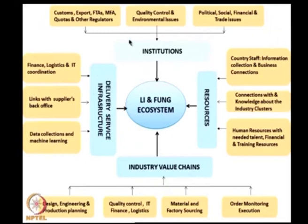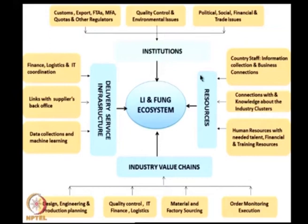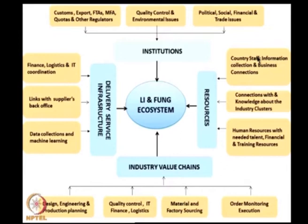If you have drawn the supply chain, and then look at an orchestrator like Li and Fung, you can determine what competencies they should have. In this case, we are mapping after the fact so you can learn what Li and Fung does. But for a hypothetical orchestrator, you can still use this framework to identify required competencies, core competencies, and so on — it is possible to do that in the reverse direction also.